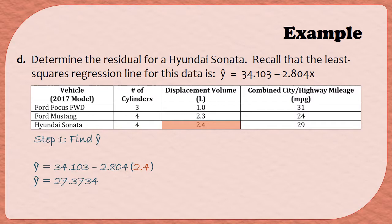Once you find the predicted value, now you can find the residual by subtracting that prediction from the actual gas mileage. According to the table, the Hyundai Sonata had an actual combined city highway mileage of 29 miles per gallon. So I'm going to substitute 29 in for y, and I'm going to put that 27.3734 in for the y hat value. We can subtract the two numbers, and we get 1.6266.